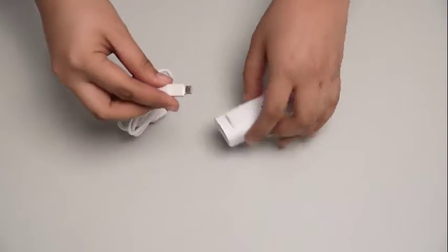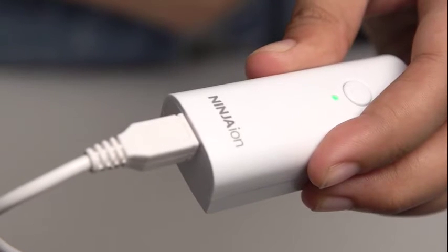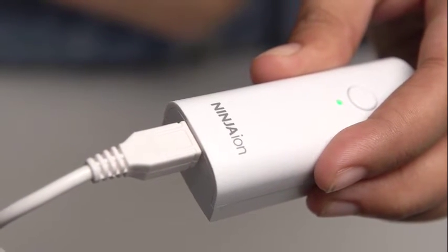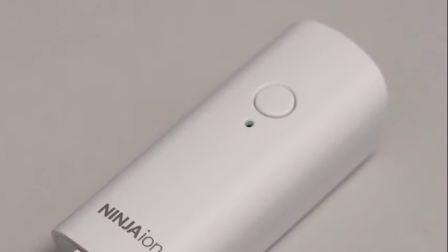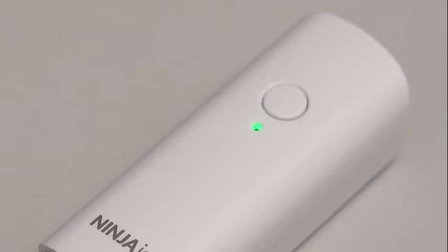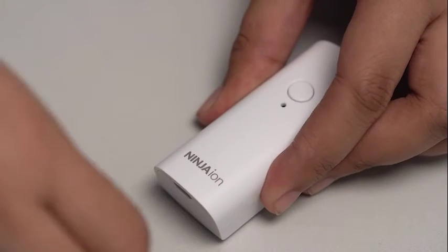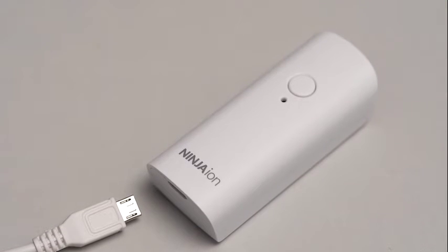Next thing we need to learn is the charging method of the Ninja Ion. First, simply connect the USB with the device's USB port located at the bottom. Please make sure the orientation is correct. Remember, the indicator light will keep on flashing in green color, and when fully charged, the indicator light will turn to solid green. Lastly, please make sure to also unplug the USB cable once fully charged.